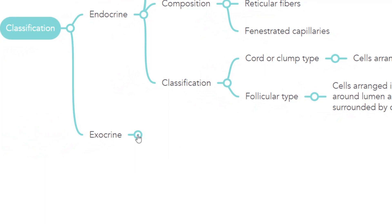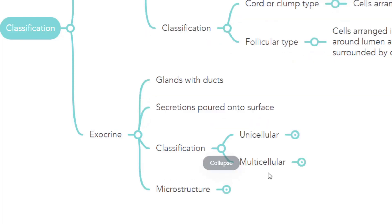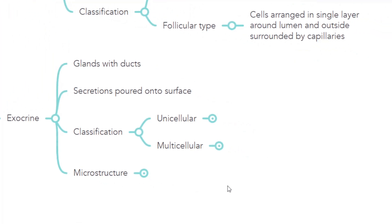Coming to the exocrine gland, the second type of epithelial glands — these are glands with ducts. The secretions of the exocrine glands are poured through the ducts onto the surface. Exocrine glands are further classified based on the number of cells into unicellular and multicellular glands. The unicellular gland is a single cell, called the goblet cell, interspersed in between the columnar cells. It can be found numerously in the respiratory system and digestive system.